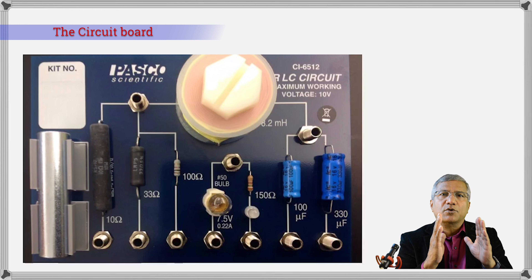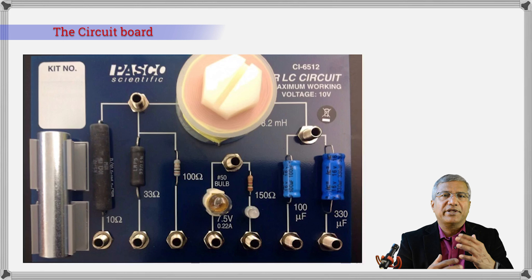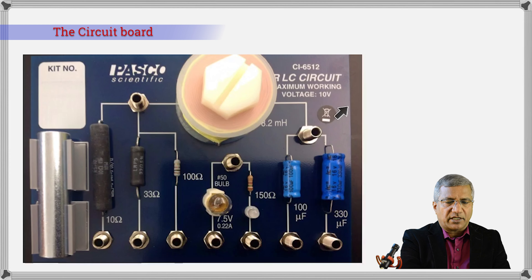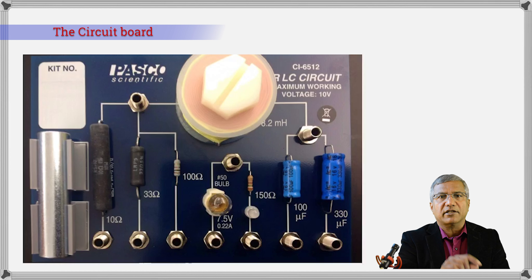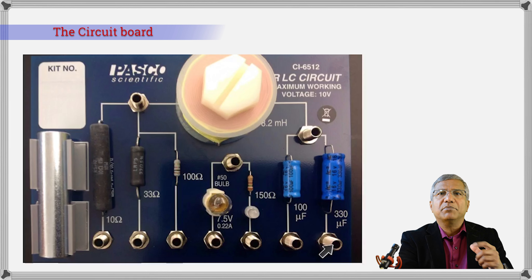That's where we give the square wave as the input. Then we look at how the capacitor reacts to this voltage — we want the voltage across the capacitor. So we take the output from both ends of the capacitor. This point is common between the input and output, so it will be the ground or the negative.